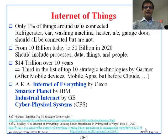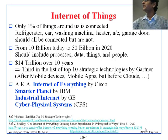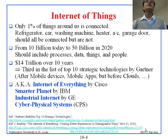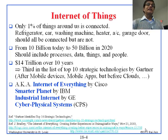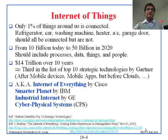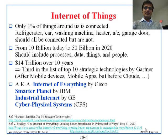Gartner made a list of top 10 strategic technologies. You will see that number three is Internet of Things. Before those two are mobile devices and mobile apps, which are already happening — those are not surprising.